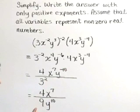In simplified form then, our answer looks like 4x to the seventh all over 9y to the tenth.